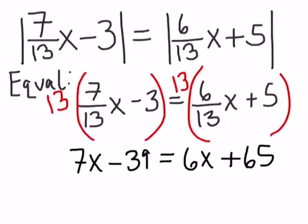And then I need to solve this equation. So to do that, I will use my properties of equality, moving variables to one side. So let's subtract 6x from both sides, and at the same time, since I moved the variables to the left, I'm going to move my numbers to the right, so add 39 to both sides.